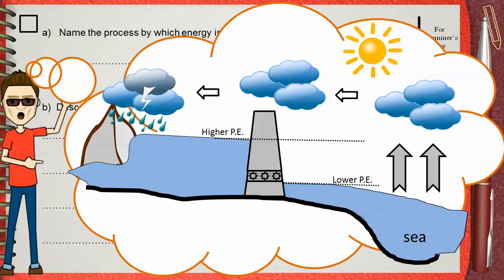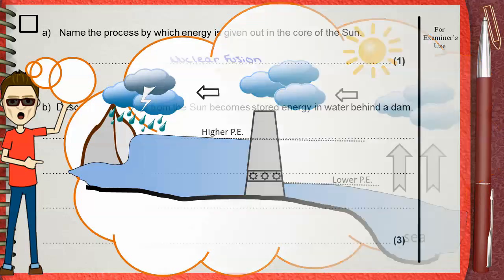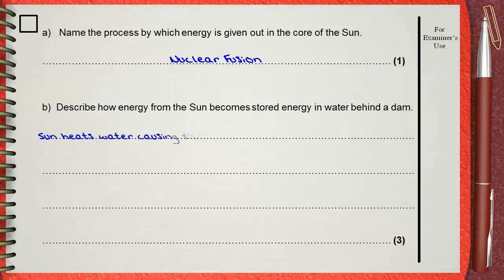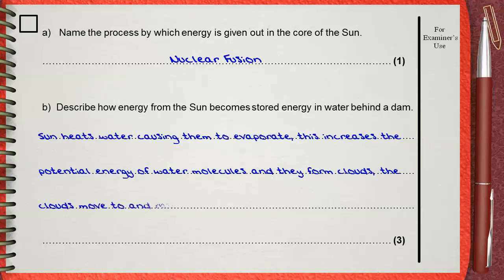So let us write this story in words. Sun heats water causing them to evaporate. This increases the potential energy of water molecules, and they form clouds. The clouds move and rain behind the dam. Now the water has a greater height than the sea level, so they have greater potential energy.